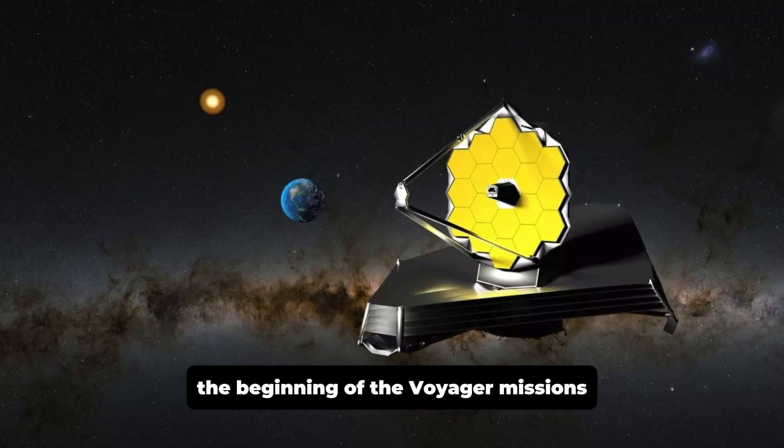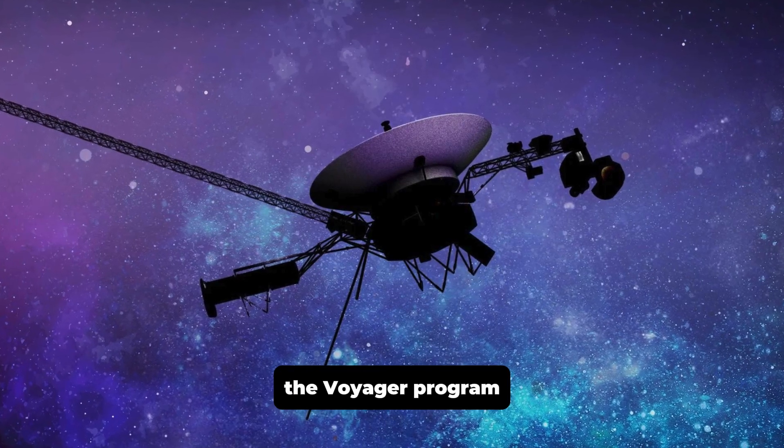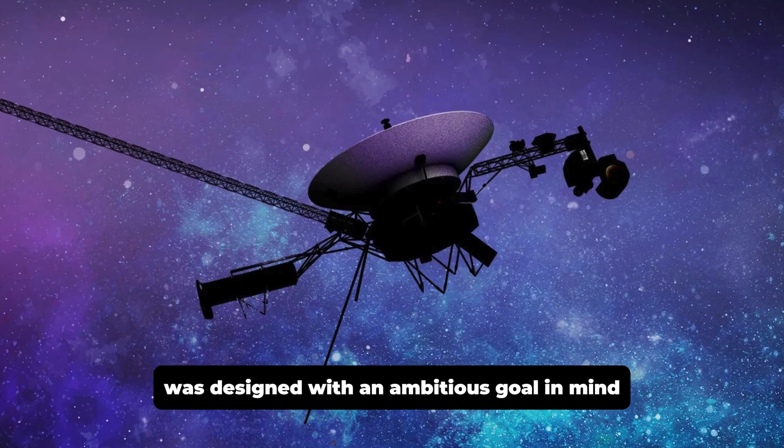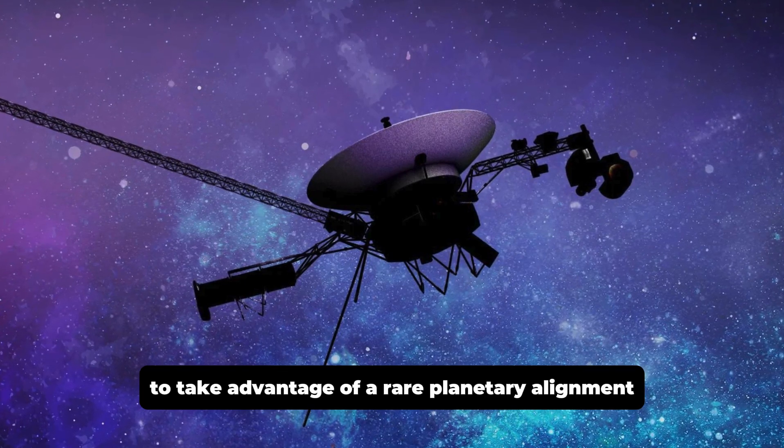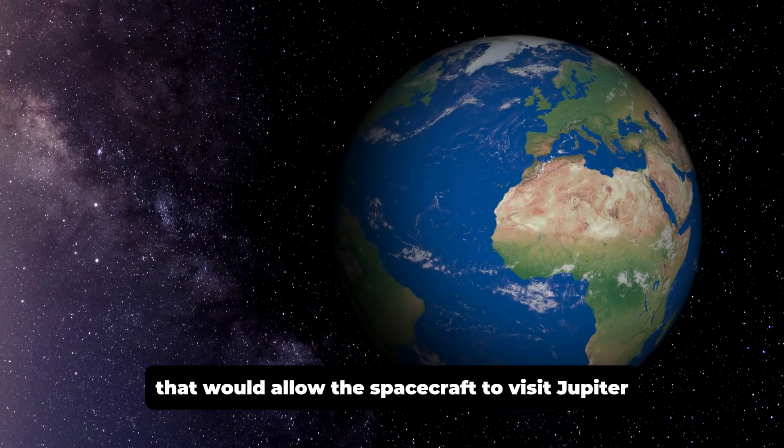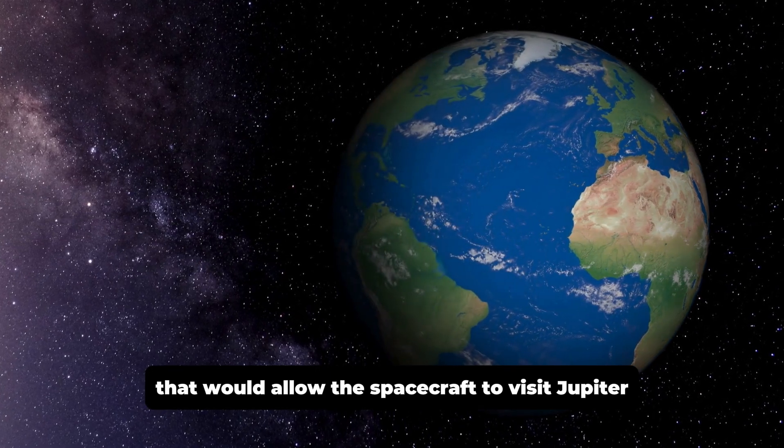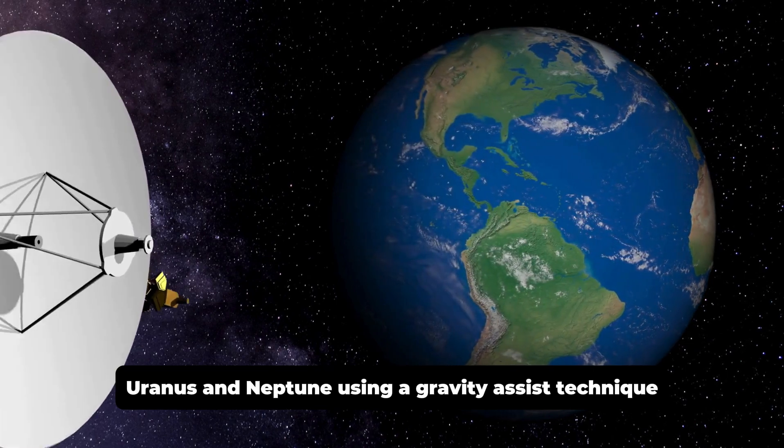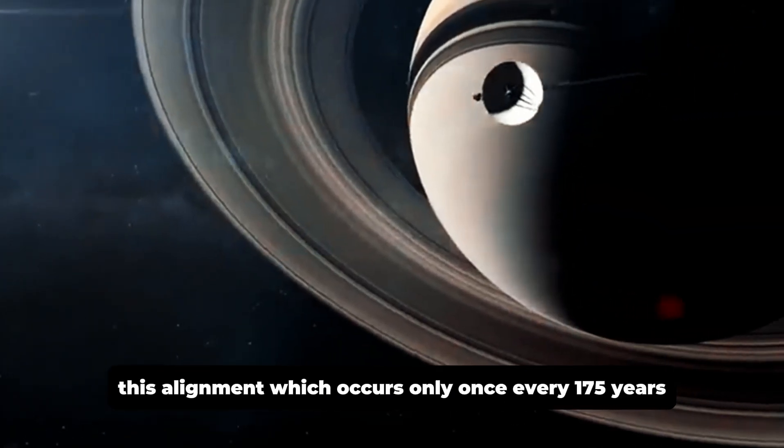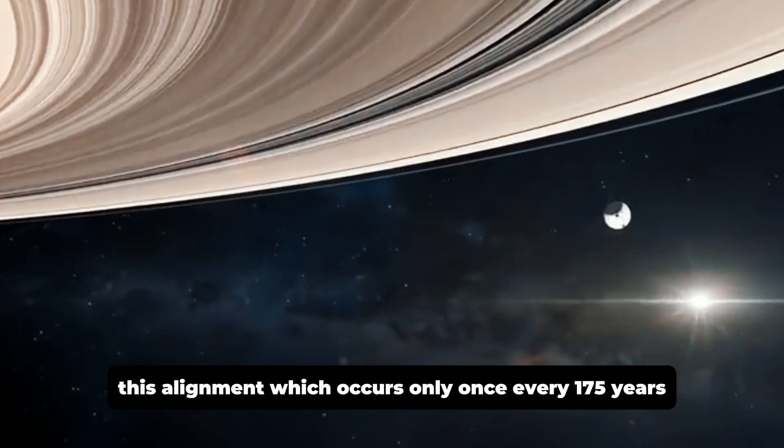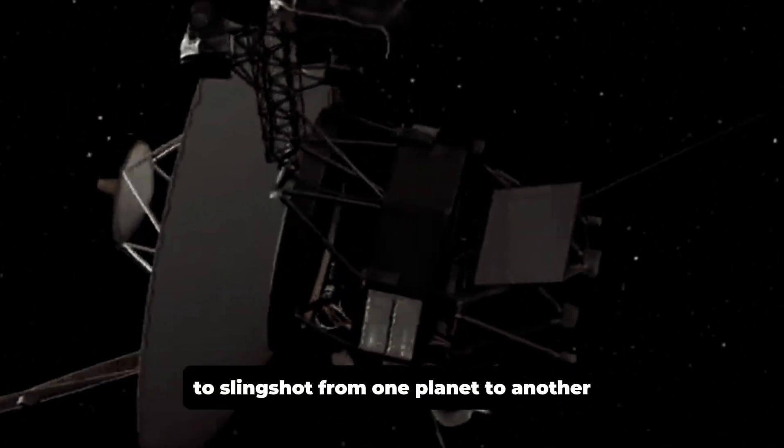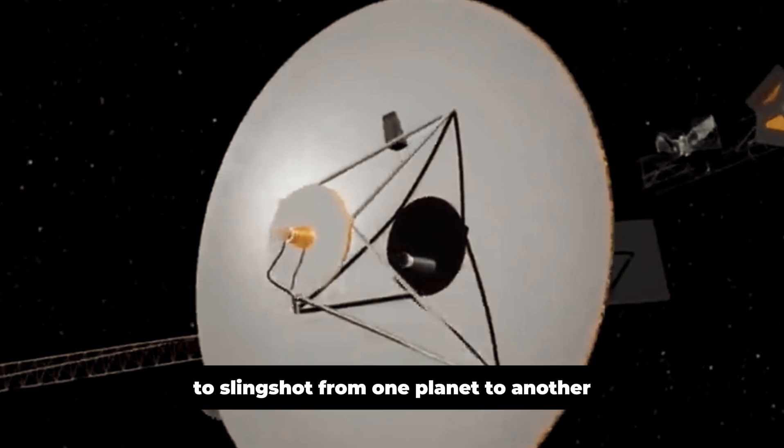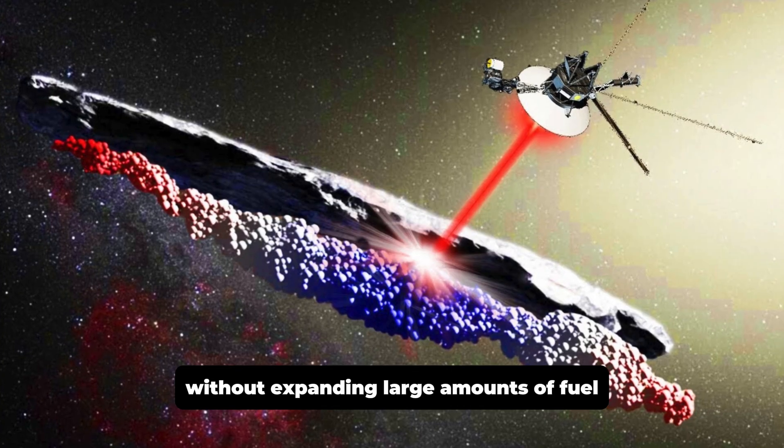The Voyager program was designed with an ambitious goal in mind, to take advantage of a rare planetary alignment in the late 1970s that would allow the spacecraft to visit Jupiter, Saturn, Uranus, and Neptune using a gravity assist technique. This alignment, which occurs only once every 175 years, enabled the spacecraft to slingshot from one planet to another without expending large amounts of fuel.